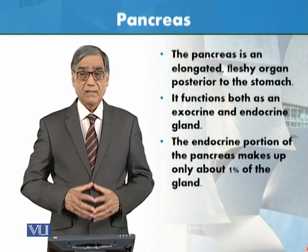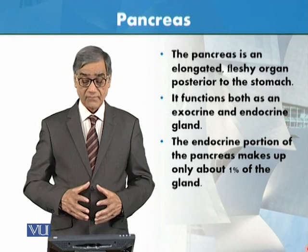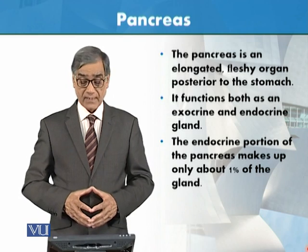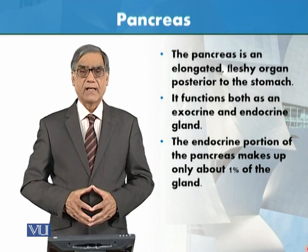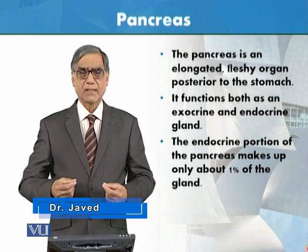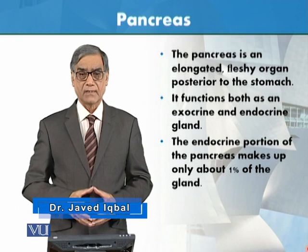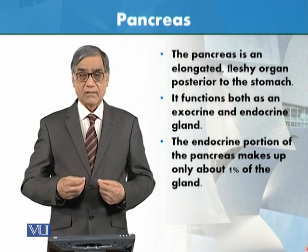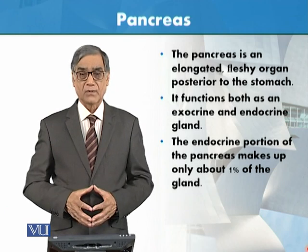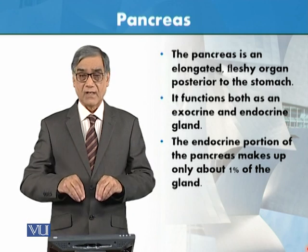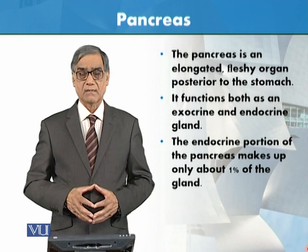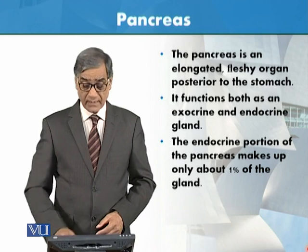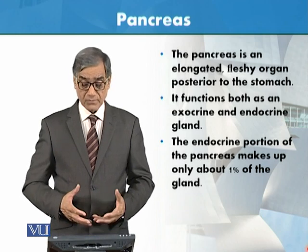Where is the pancreas? It is an elongated fleshy organ located posterior to the stomach. It functions both as an exocrine and endocrine gland. Exocrine because it produces pancreatic juices helpful in food digestion. Endocrine because it releases hormones — insulin and glucagon — directly into the blood, transported to every cell of the body. The endocrine portion makes up about 1% of the gland.